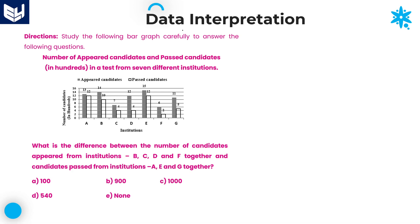Hi everyone, welcome to the session. In this session, I am continuing data interpretation — that is paragraph data interpretation. Here, first of all, we need to read the information carefully and then solve the questions according to the given information. The information is about the number of appeared candidates and passed candidates in a test from 7 different institutions.